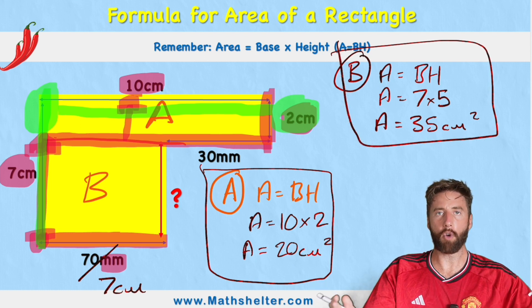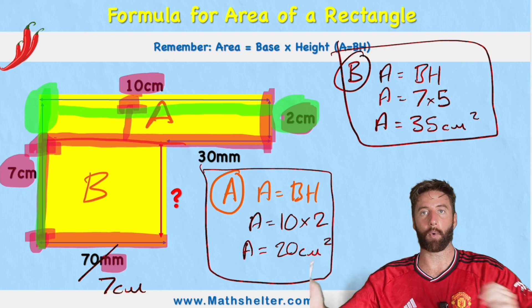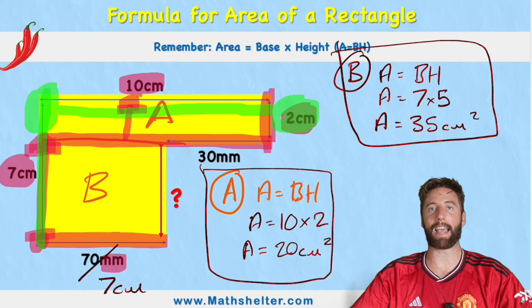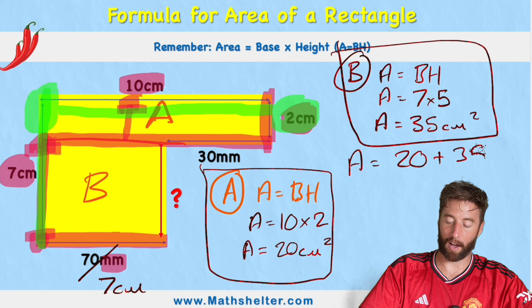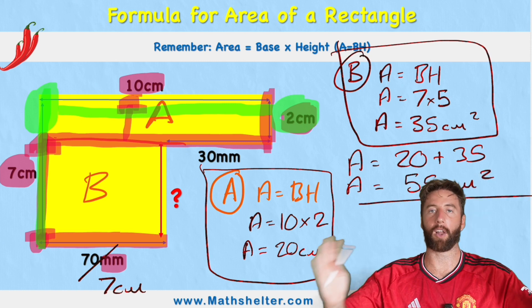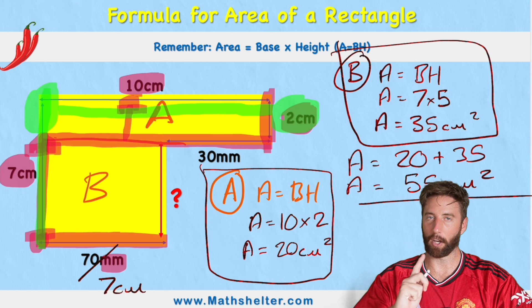Am I finished? No, because so far I've got the area of shape A and the area of shape B. I need to put them back together to get my total. So my area is going to be 20 plus 35 — therefore my area equals 55 centimeters squared. Loads to do, but not too tricky — not when you know how.